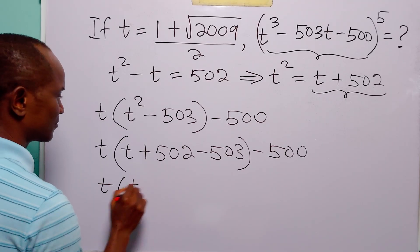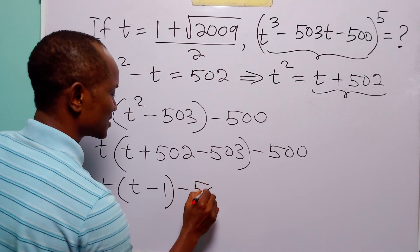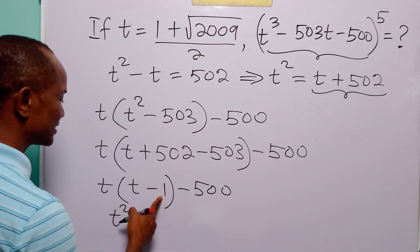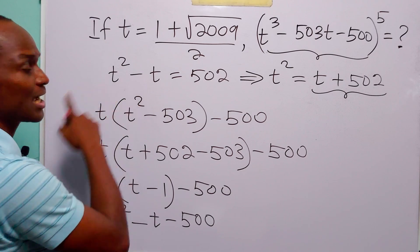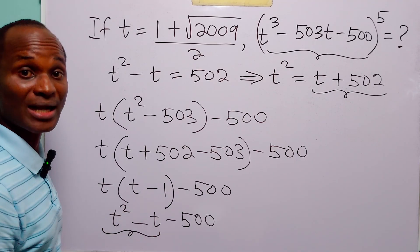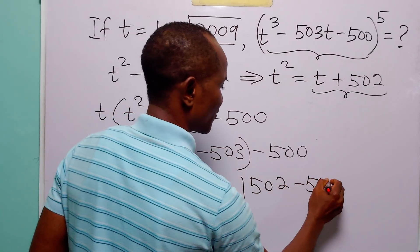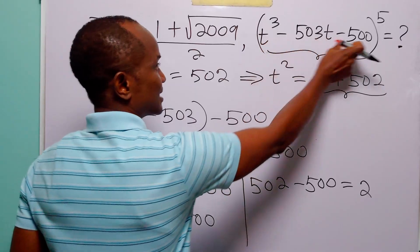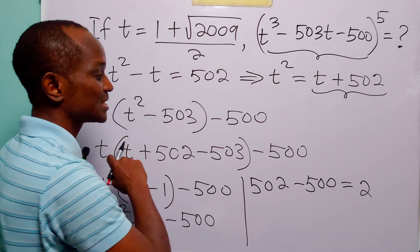Simplifying this, we have 502 − 503, which is minus 1. So we have t(t − 1) − 500. Expanding the brackets: t times t is t², t times −1 is −t, then minus 500. Now look at this — we have t² − t is equal to 502, so we can replace this with 502. When we do that, we have 502 − 500, which of course is equal to 2. So this polynomial, when t = (1 + √2009)/2, is equal to 2.